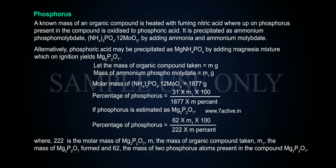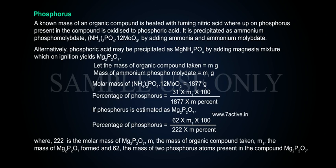Where M is the mass of organic compound taken, M1 is the mass of Mg2P2O7 formed, and 62 is the mass of 2 phosphorus atoms present in the compound Mg2P2O7.